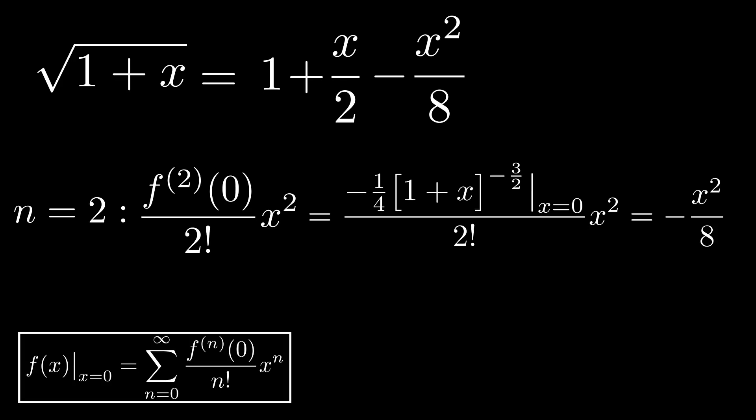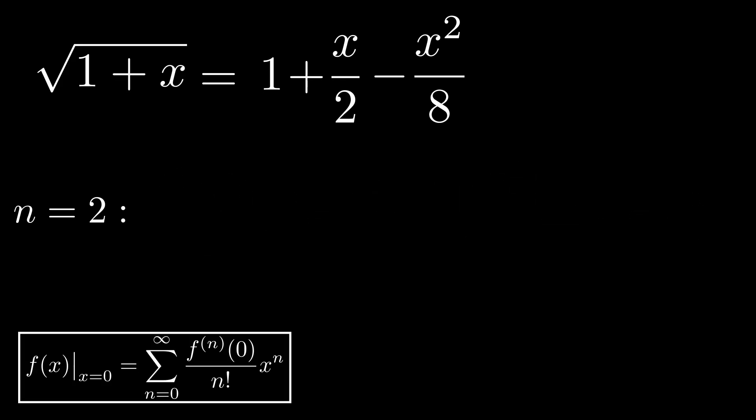To end off, we compute the fourth term, with n is equal to 3. The pattern should be clear. The most difficult part is calculating the ever-increasing derivatives of our function. The third derivative of the square root of 1 plus x is 3 over 8 times 1 plus x to the power of minus 5 halves.